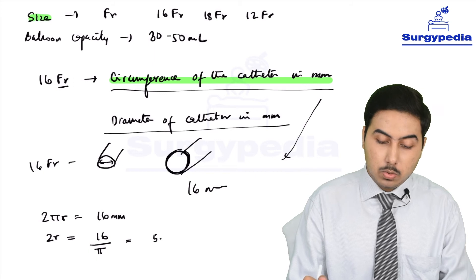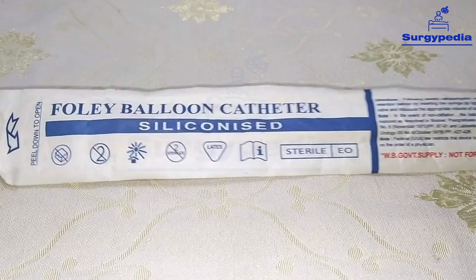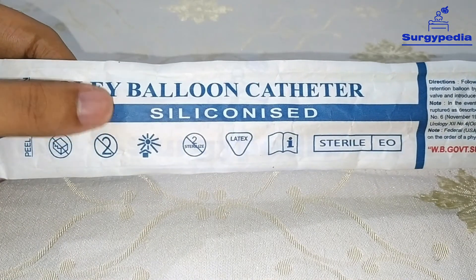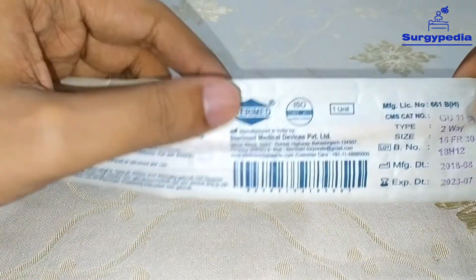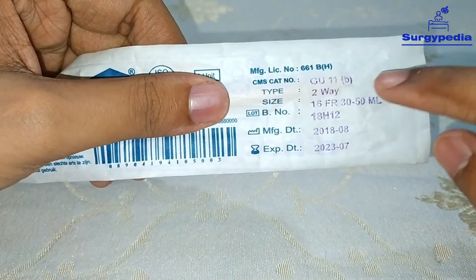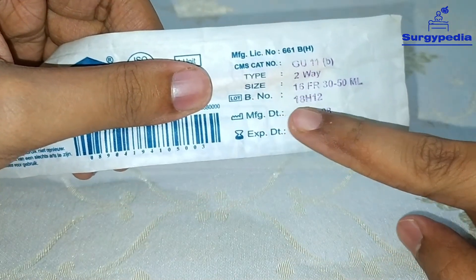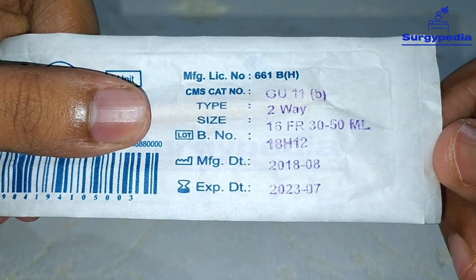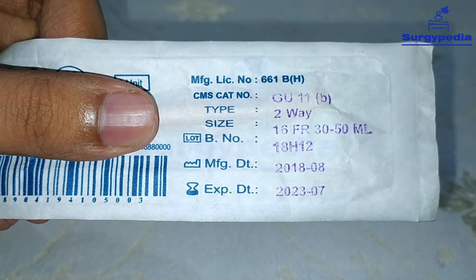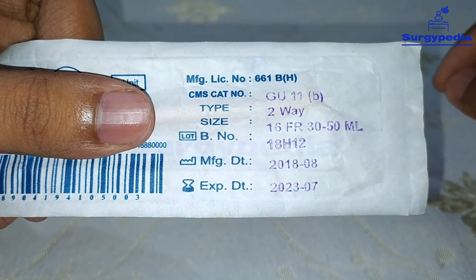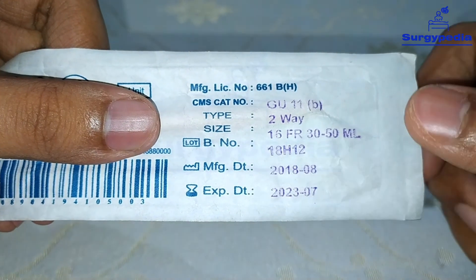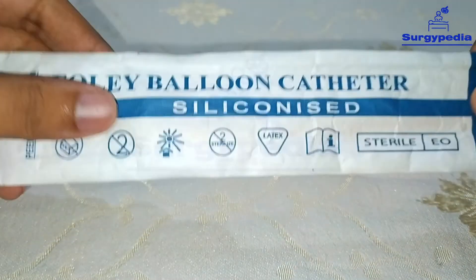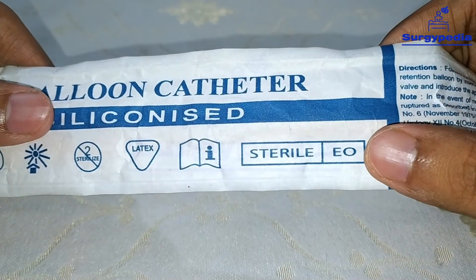Now let's have a closer look at the Foley's catheter. This is a Foley balloon catheter — siliconized — as written on the pack. The main part of the pack shows the size, which is 16 French, written as 16 FR. And as we discussed, 30 to 50 ml is the balloon capacity. Manufacturing date and date of expiry are also marked.